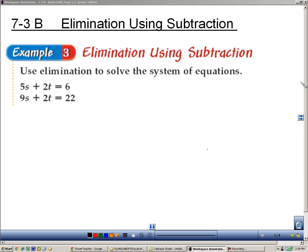Section 7-3B is about elimination using subtraction. I want to tell you why we have to turn to subtraction now, and the answer is if I were to try to add 5 and 9, I would not get a 0. And if I add 2 and 2, I wouldn't get a 0, so nothing would be eliminated.